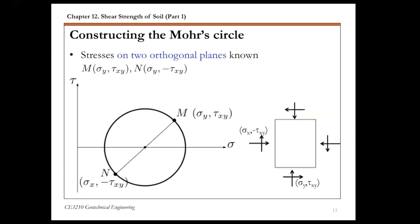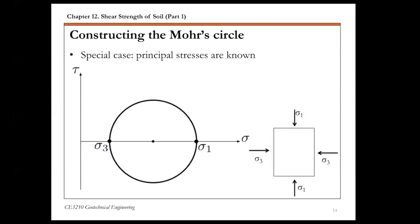To construct a Mohr's circle there are two scenarios. The first case is when the soil element is subjected to normal and shear stresses on two orthogonal planes — you have two points M and N on the Mohr's circle, so you can construct the circle knowing its diameter and center. The second case is when you know the principal stresses — for instance, the vertical major principal stress and horizontal minor principal stress — giving you sigma one and sigma three on the horizontal axis where tau is zero.